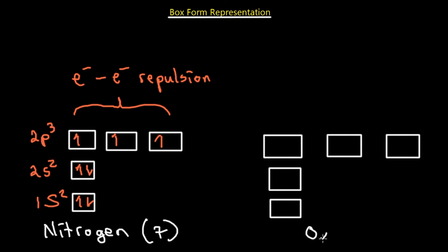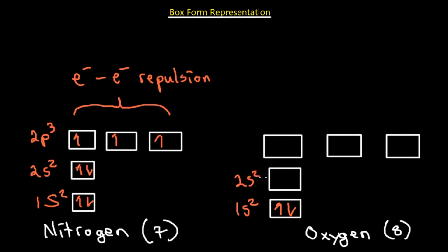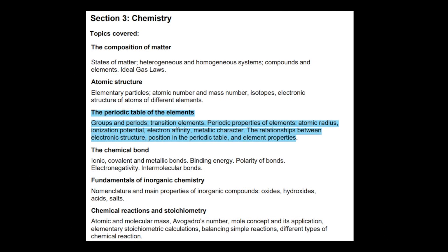Let's do oxygen, which has eight electrons. We have 1s² — one clockwise, one counterclockwise. Then 2s² — same thing. For 2p⁴, we first fill one electron into each of the three P sub shell boxes in the same spin direction, then the extra fourth electron pairs up in the first box spinning the opposite way, making that box completely filled. This concludes our video on the electronic structure of atoms. In the next video, we will look at periodic trends.